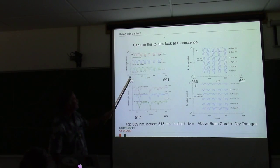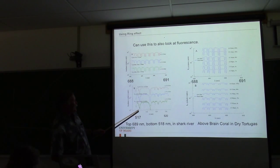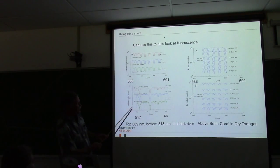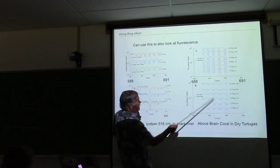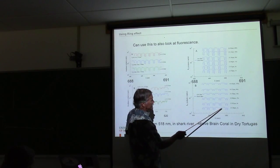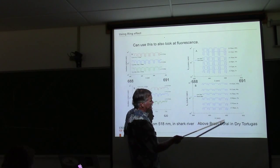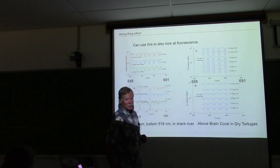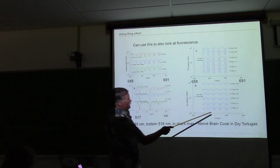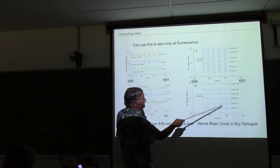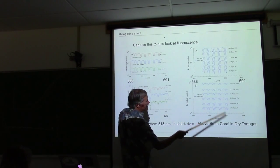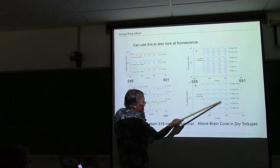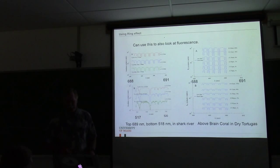You could also use the ring effect for fluorescence. Here's a head of brain coral: this is the downwelling irradiance, and this is the upwelling irradiance right above the brain coral — you can see the fluorescence from the organisms in it. You also see fluorescence quenching: the fluorescence decreases as the sun gets higher in the sky.